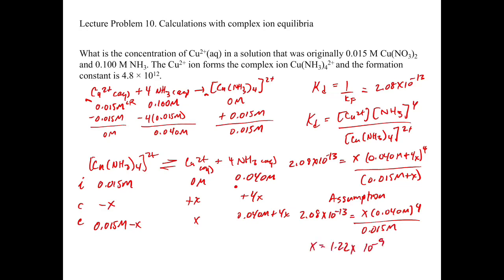This problem combines concepts from chapter 16 — the limiting reagent table at the beginning — and then becomes a regular equilibrium problem: set up an ICE table and solve.